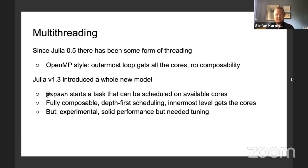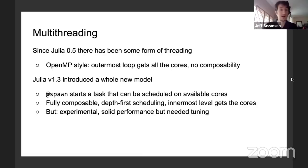Jeff is going to talk about multithreading. Multithreading has been one of the big arcs of the project. Initially we didn't have any for several versions, and then in 0.5 we started adding a little bit. We had a simple loop parallel model at first, just flat parallelism. Then just last year we announced an entirely new model based on spawn/wait, which is a composable model. Composability is very important to us.